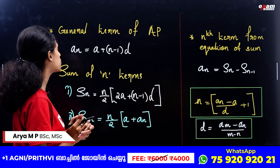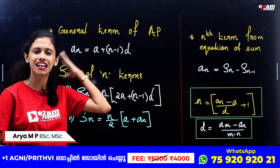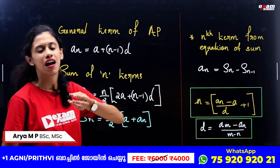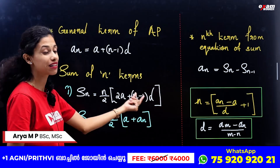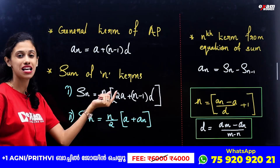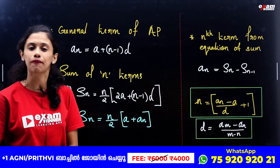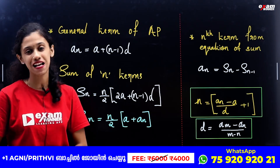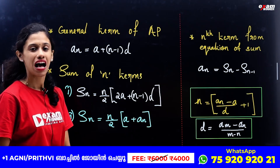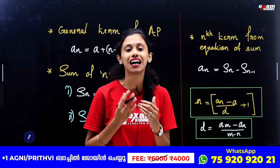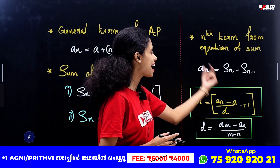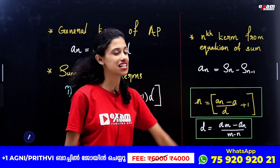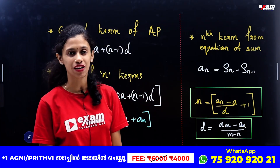We will discuss the general term: aₙ is equal to a plus n minus 1 into d. We will discuss the sum of n terms, the first term, and the common difference. The first term of n terms: Sₙ is equal to n by 2 into a plus aₙ. We will discuss these three equations.